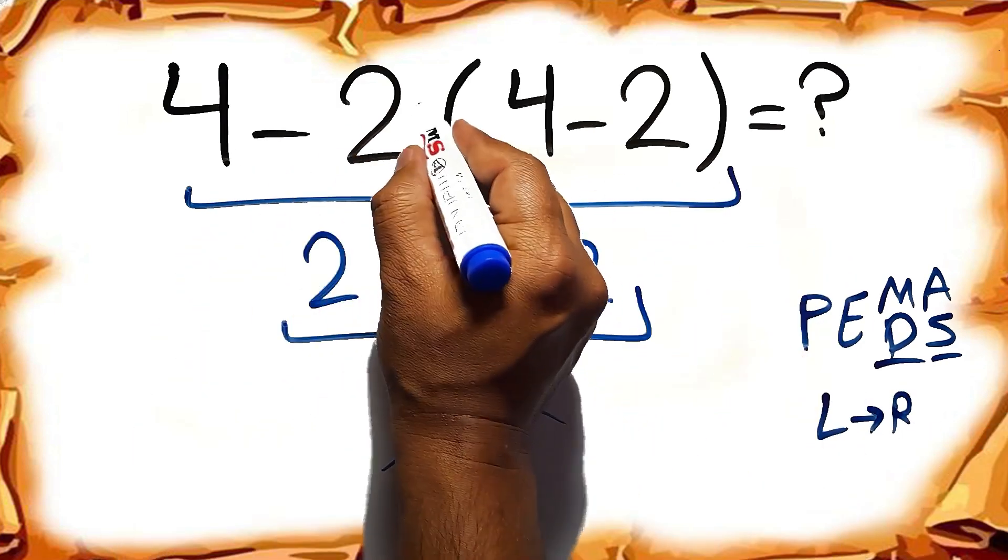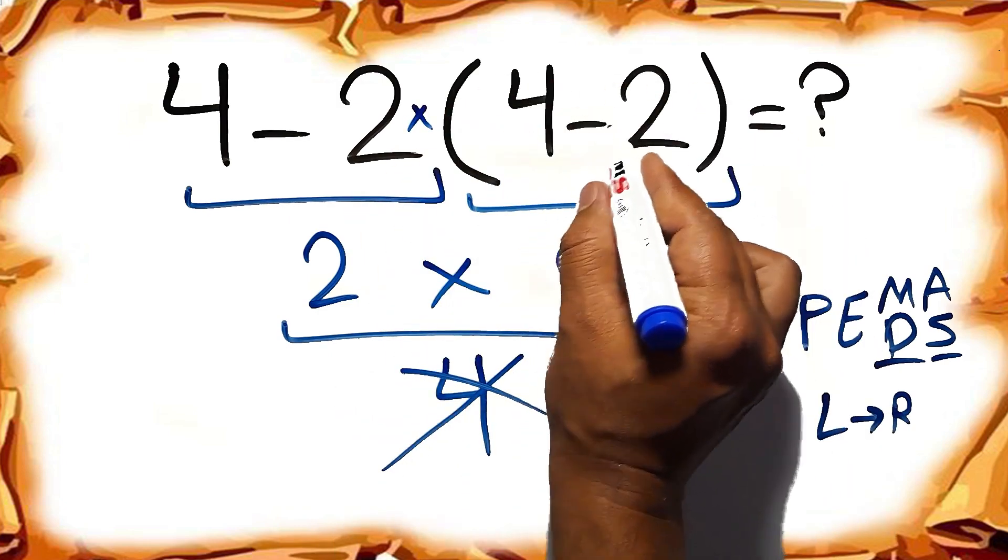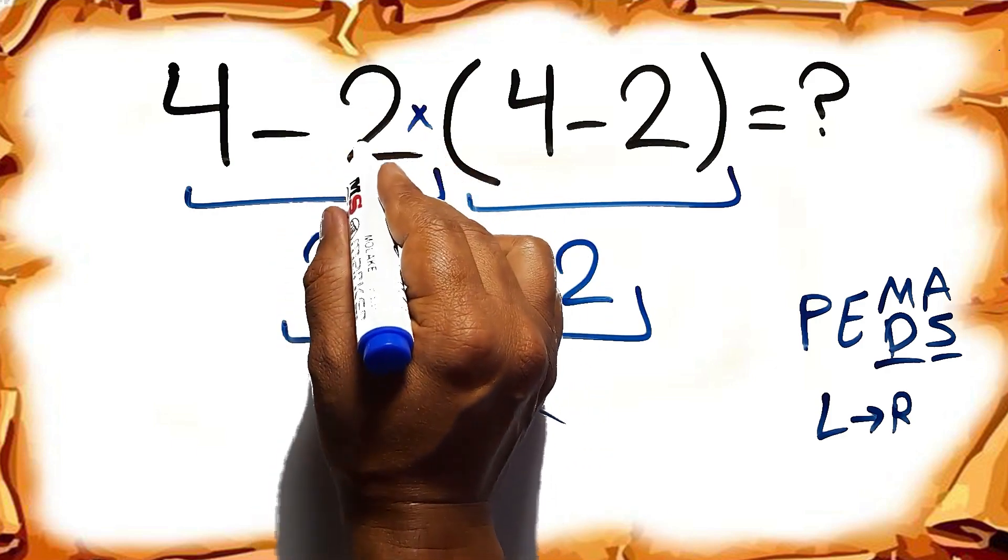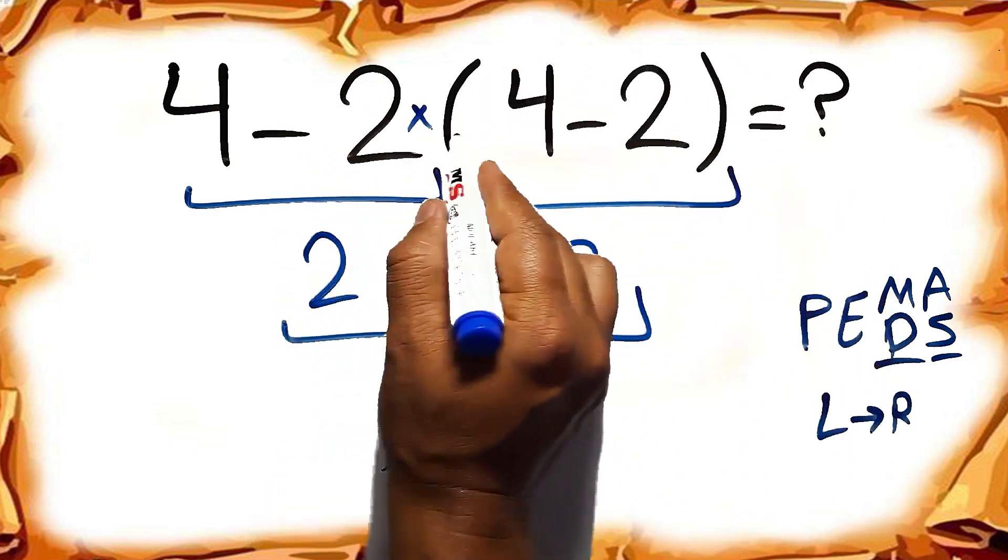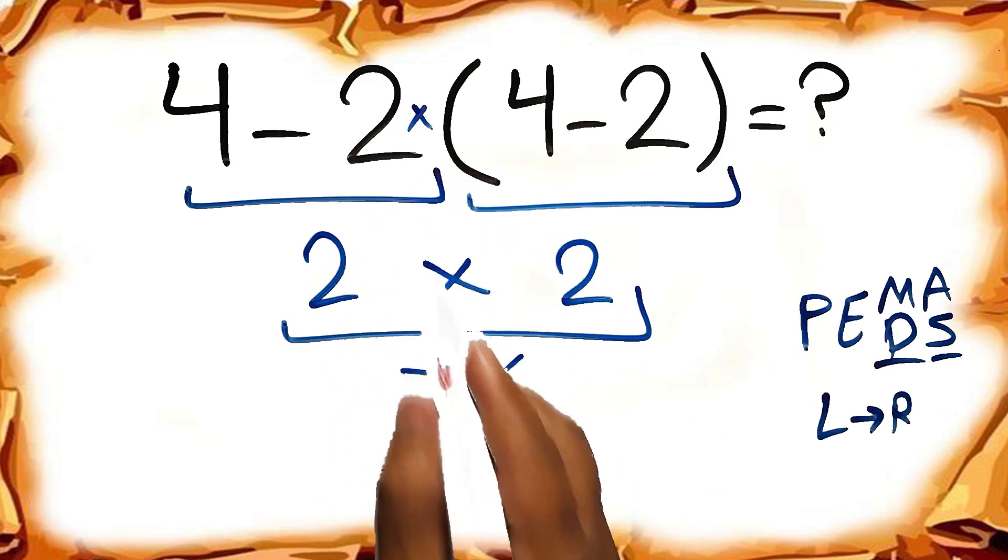In this expression we have 1 subtraction, 1 multiplication, and 1 parenthesis. Inside this parenthesis we have 1 subtraction. Here we have a multiplication because in mathematics when a number is placed next to parentheses, it means multiplication, and we usually don't write the multiplication sign for brevity.